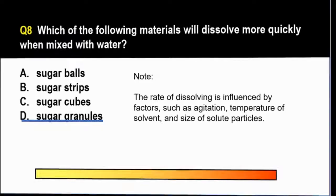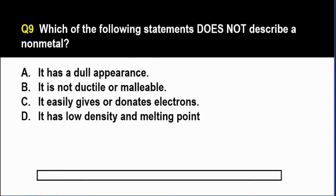Question number 9. Which of the following statements does not describe a non-metal? A. It has a dull appearance. B. It is not ductile or malleable. C. It easily gives or donates electrons. And D. It has low density and melting point.